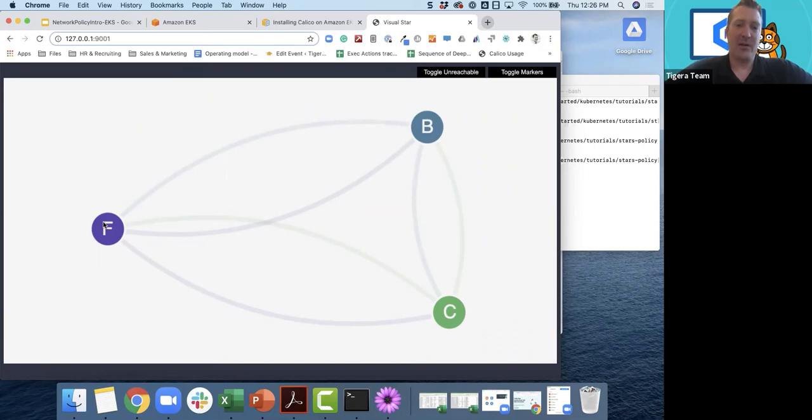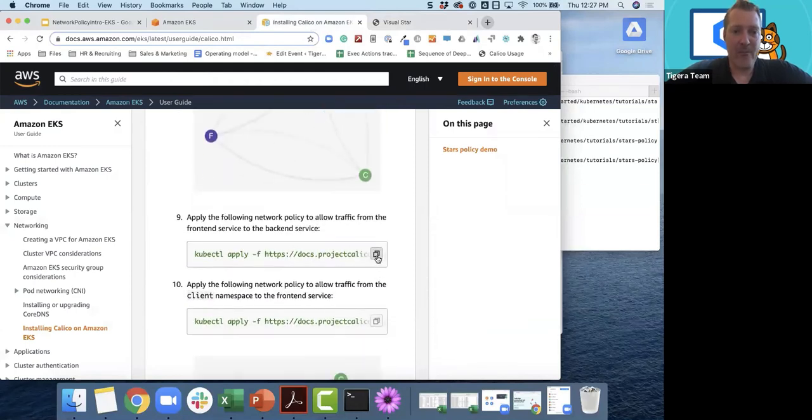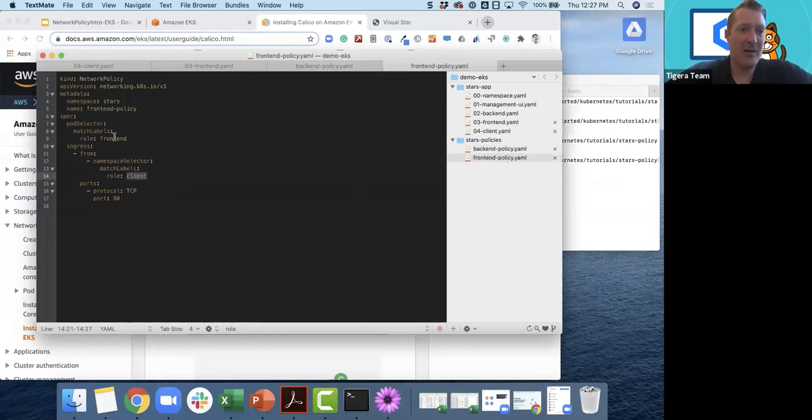What we'd like to do is allow the client to talk to the frontend and only the frontend, and the frontend to talk to the backend. But certainly not the client to get directly to the backend, considering that this client is a web-facing microservice. We have this backend policy. The backend policy here says that if your role equals backend, you're going to allow ingress from any pod labeled frontend. Likewise, the frontend is going to allow ingress from client.